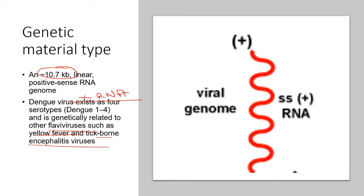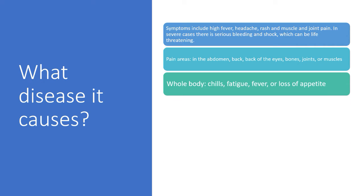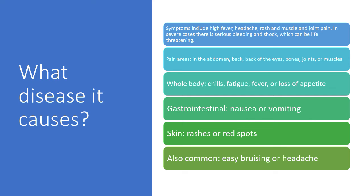What kind of disease does this dengue virus cause? The symptoms include high fever, headache, rash, muscle and joint pain, and in severe cases, serious bleeding and shock to the body, which can be life threatening. If it's infecting a person for the first time, the person may witness different pain areas like pain in abdomen, back, back of the eyes, bones, joints, and muscles. There will be whole body chills, fatigue, fever, or loss of appetite, gastrointestinal symptoms like nausea or vomiting, skin rashes and red spots, and very common easy bruising or headache.